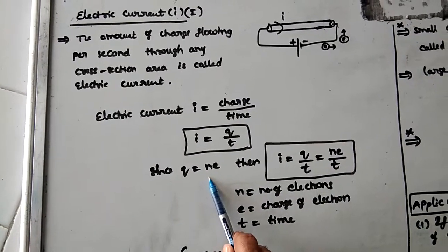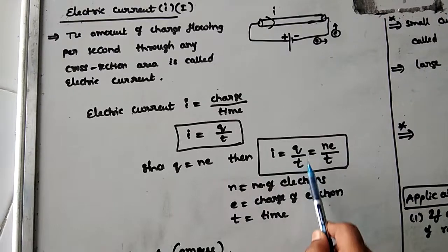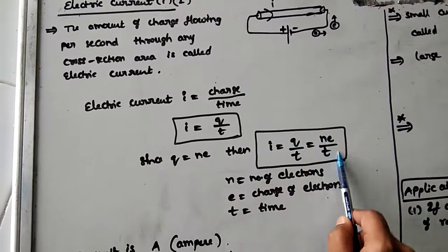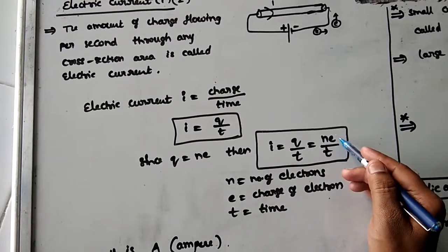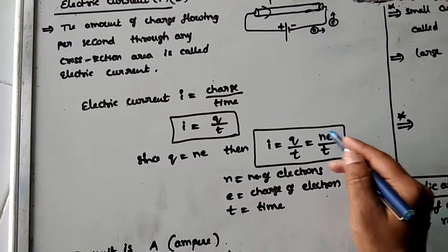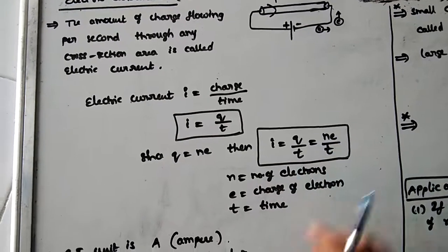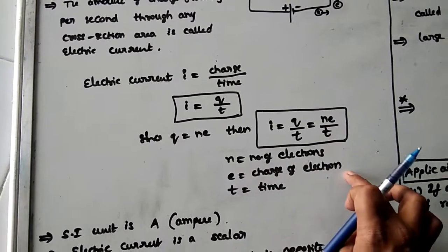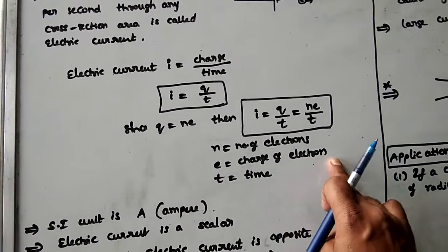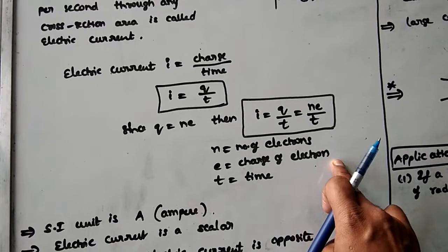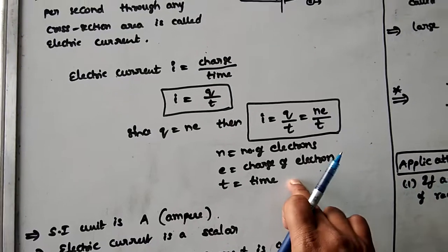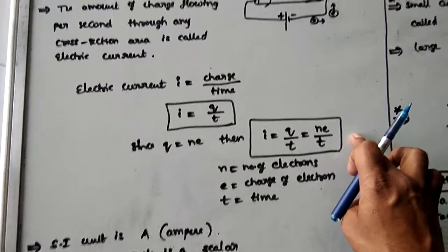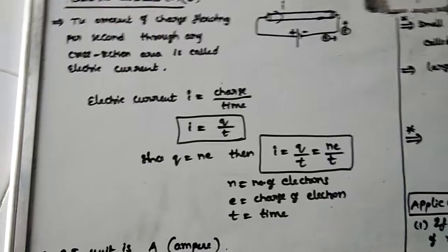Since Q = ne, we can write I = ne/t. On the basis of this formula, you will get numerical problems. Here, n is the number of electrons, e is the charge of an electron which is 1.6 × 10⁻¹⁹ coulombs, and t is time. Remember this formula — you will get numericals based on it.